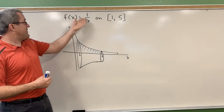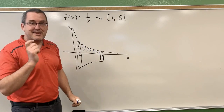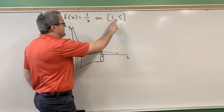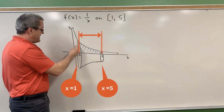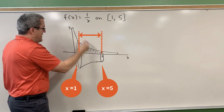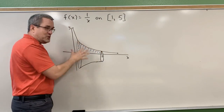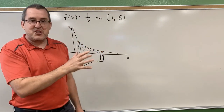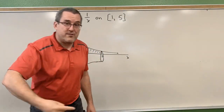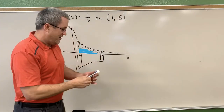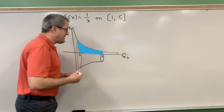The function I'm thinking about is f(x) = 1/x. Let's think about this function on the interval from x = 1 to 5. Here's the function 1/x, and in blue I've shaded the area that we're going to consider revolving around the horizontal, or the x-axis.